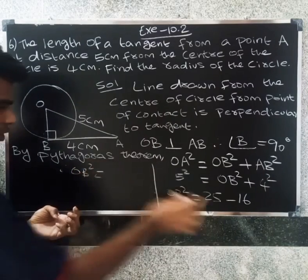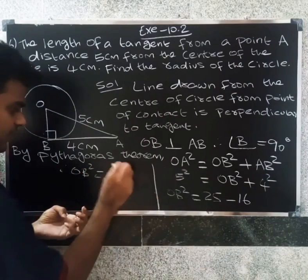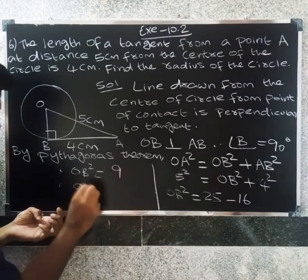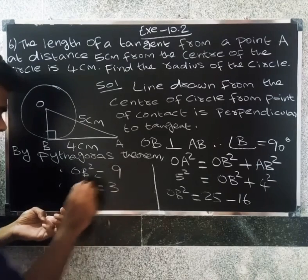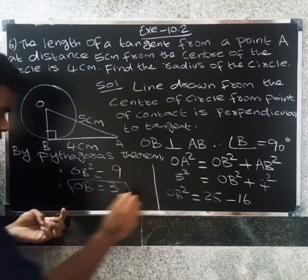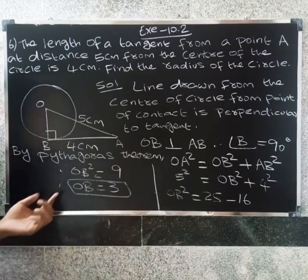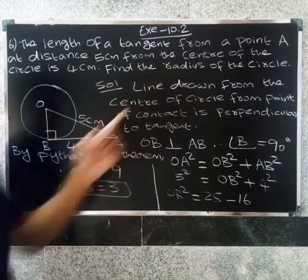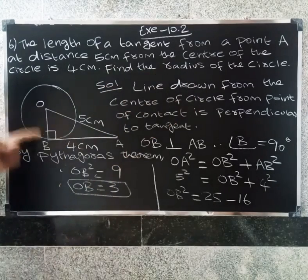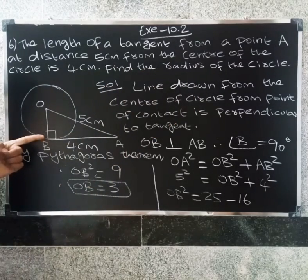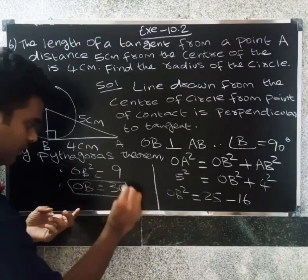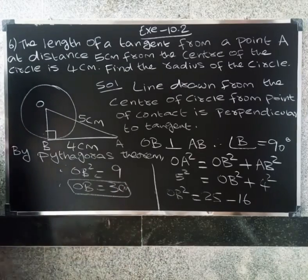Therefore OB squared equals 5 squared minus 4 squared, which is 25 minus 16, equals 9. Therefore OB equals square root of 9, which equals 3. So the radius of the circle OB is equal to 3 cm.